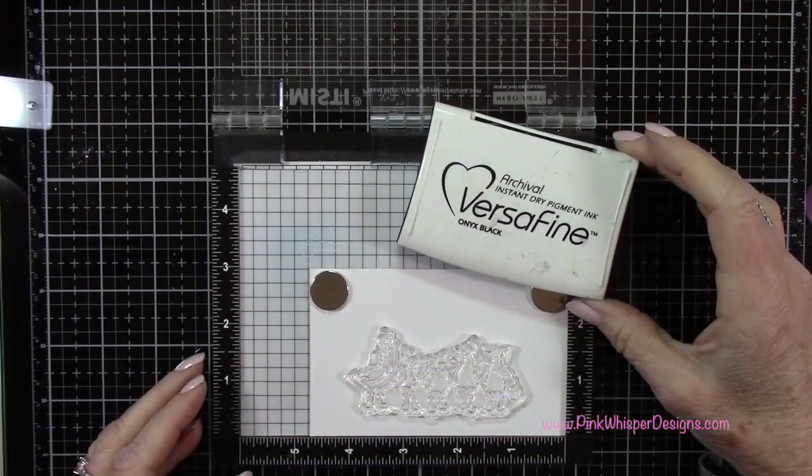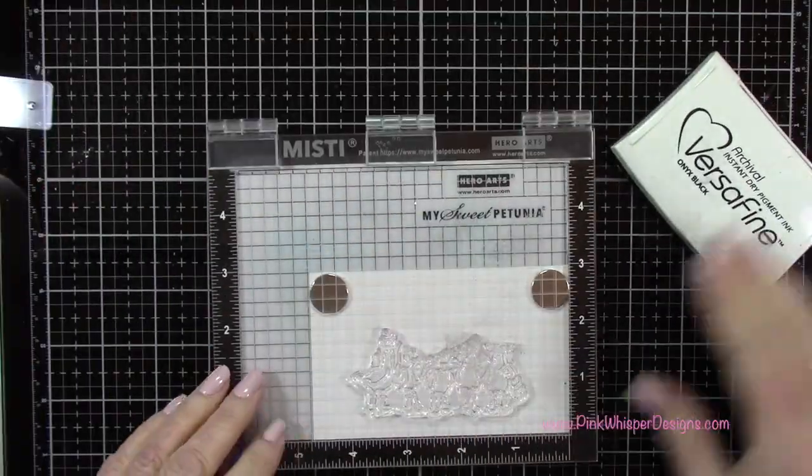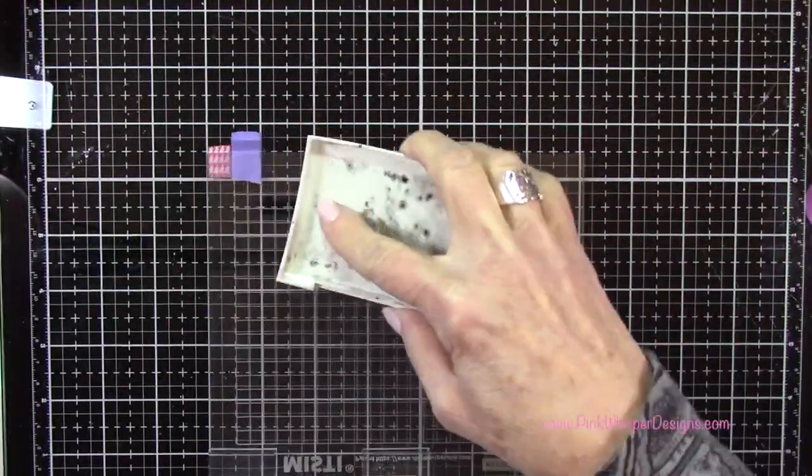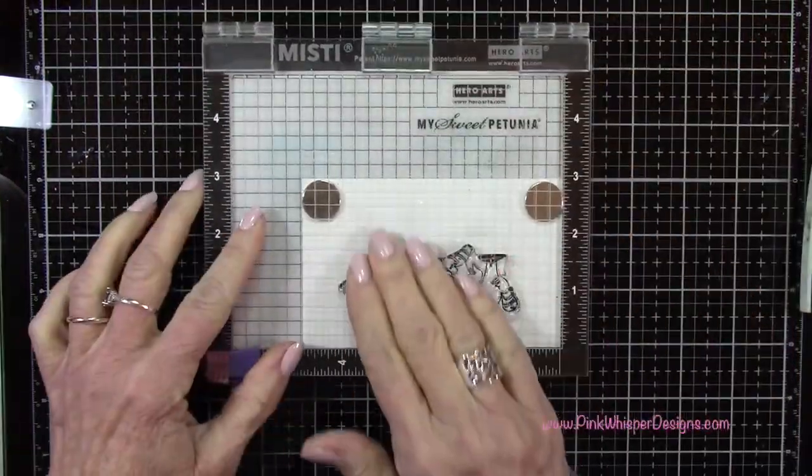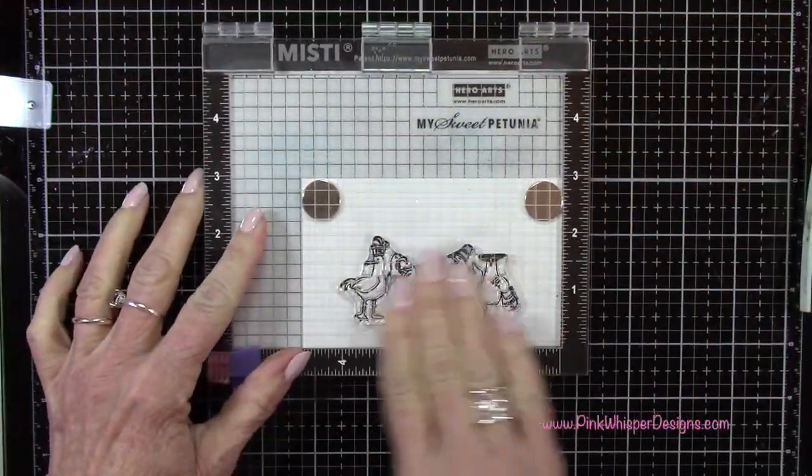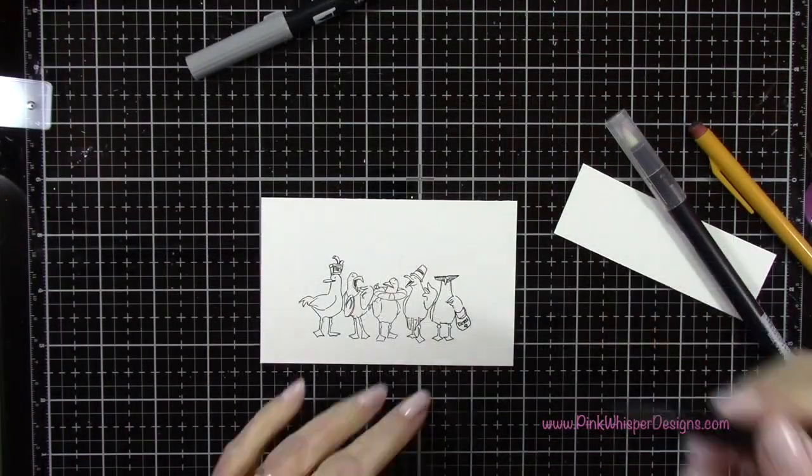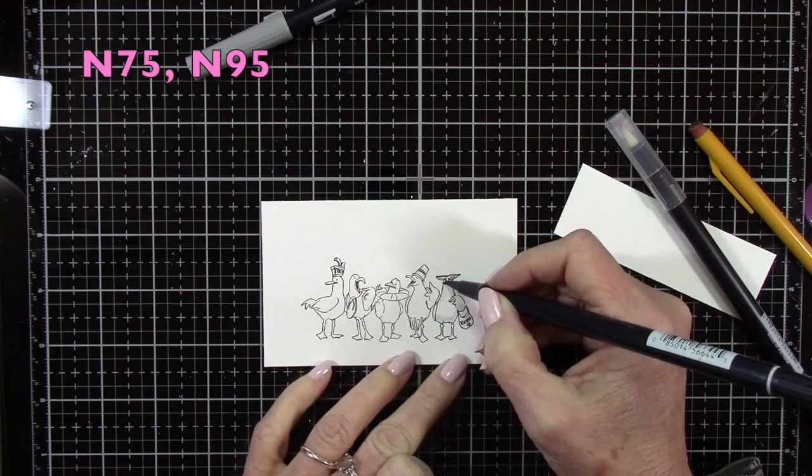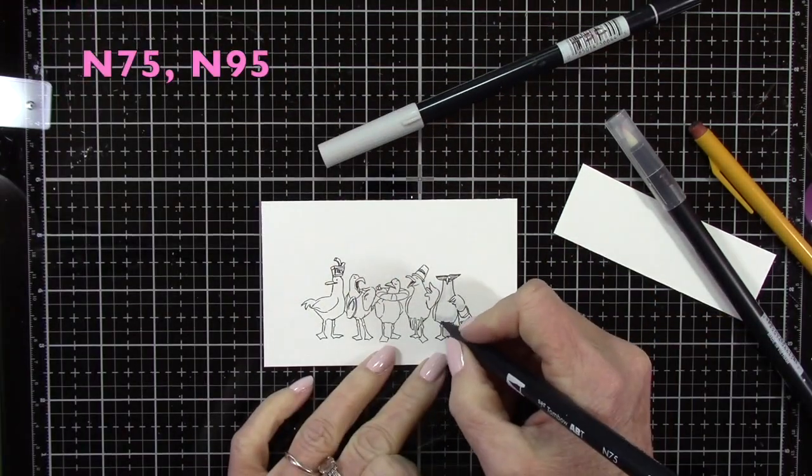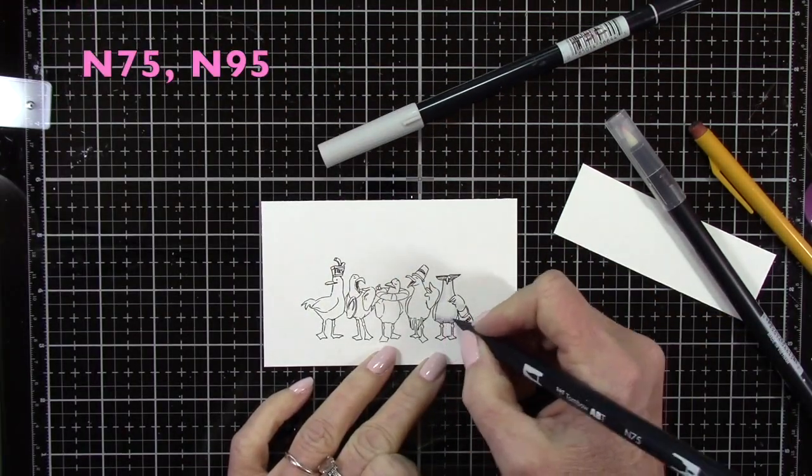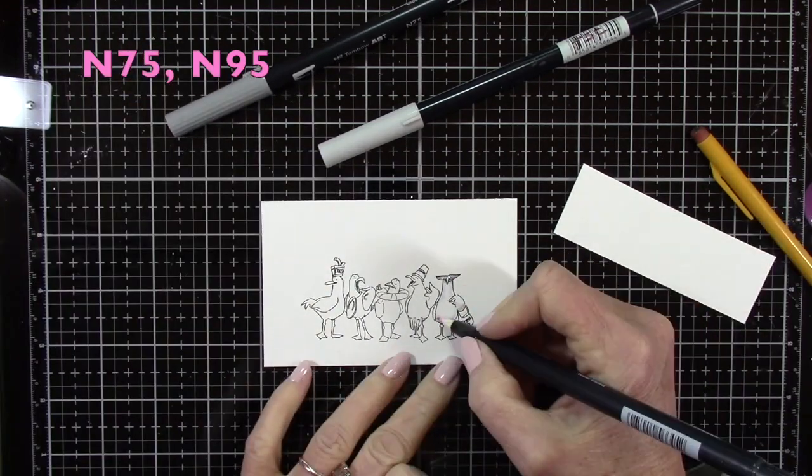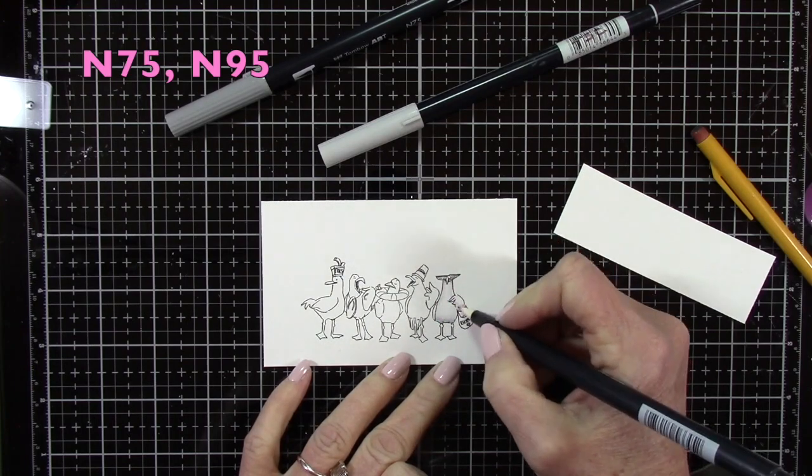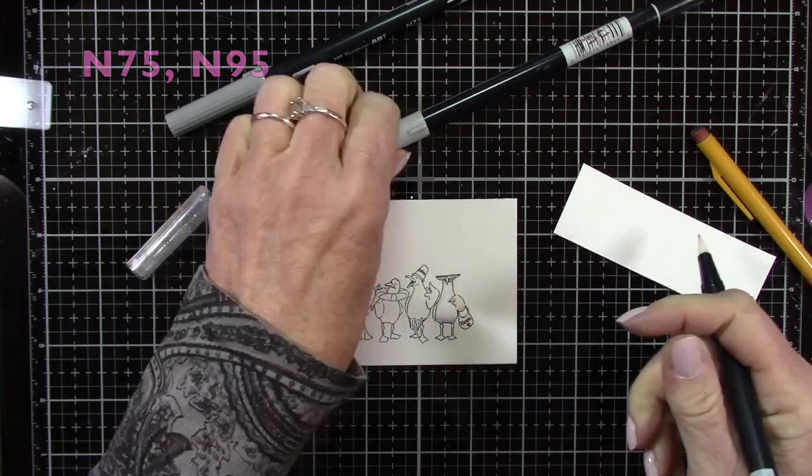For paper I'm using the Strathmore Bristol Smooth 100 pound cardstock. I've gone ahead and placed it in my Mini Misti. For ink I'm using the VersaFine Onyx black ink, which is a permanent black ink. To color the images I'm using N75 and N95, the Tombow Dual Brush Pens. They're a water-based marker with a bullet tip on one end and a brush tip on the other. For blending I'm using my Tombow Blender Pen which is N00.